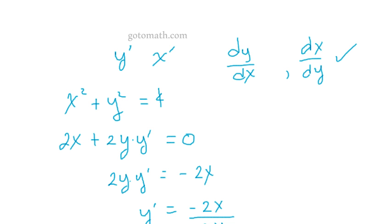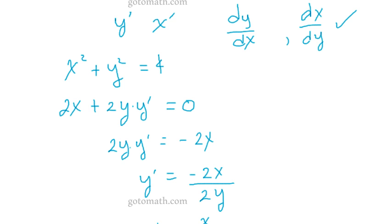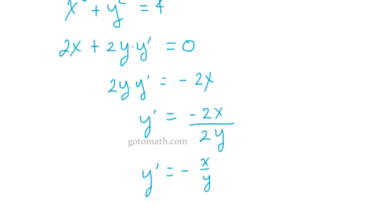dx over dy, man, that trips people up. I'm telling you, you've got to watch out. Okay, so there we go, y prime is equal to negative x over y.